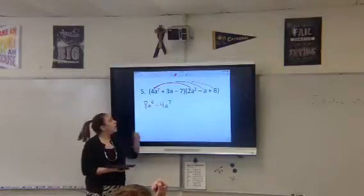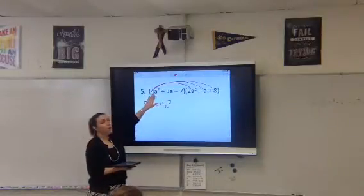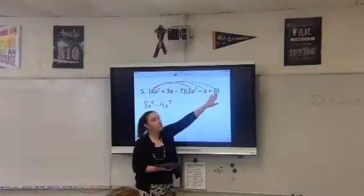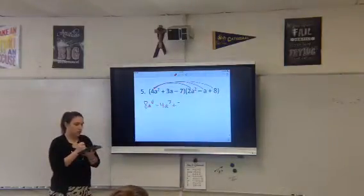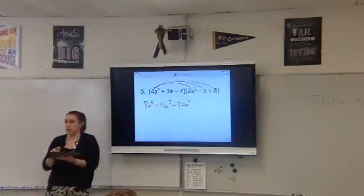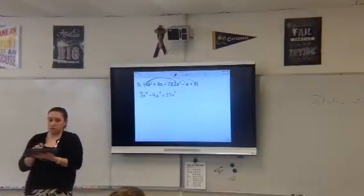Okay. All right, Bria, what is it when you take 4a squared times 8? 32, 32, 6, 8. Very good. Okay, does anybody have a question about those first three parts? Okay.